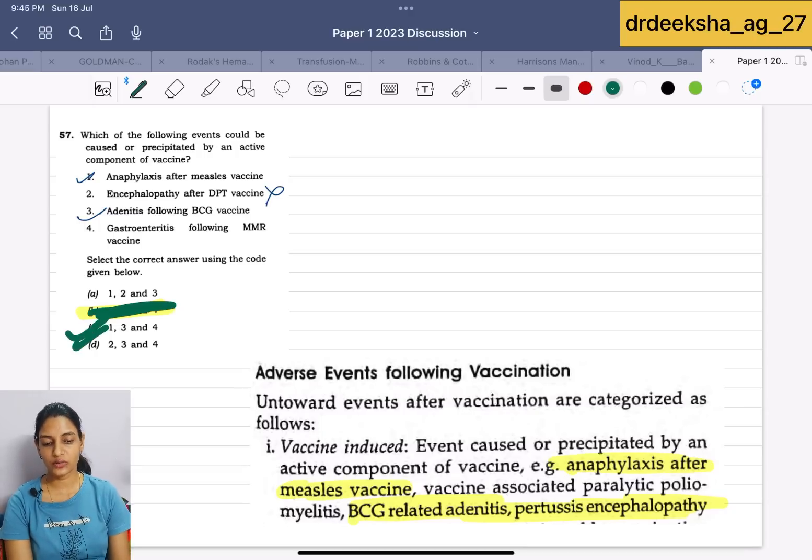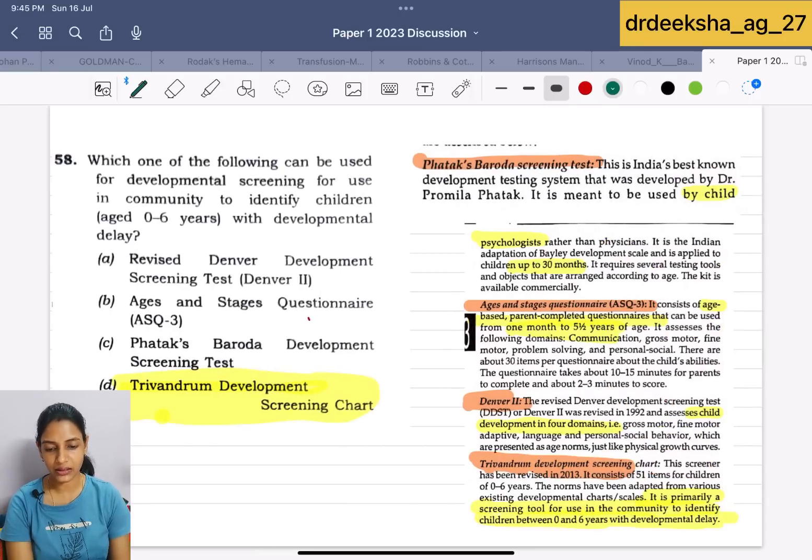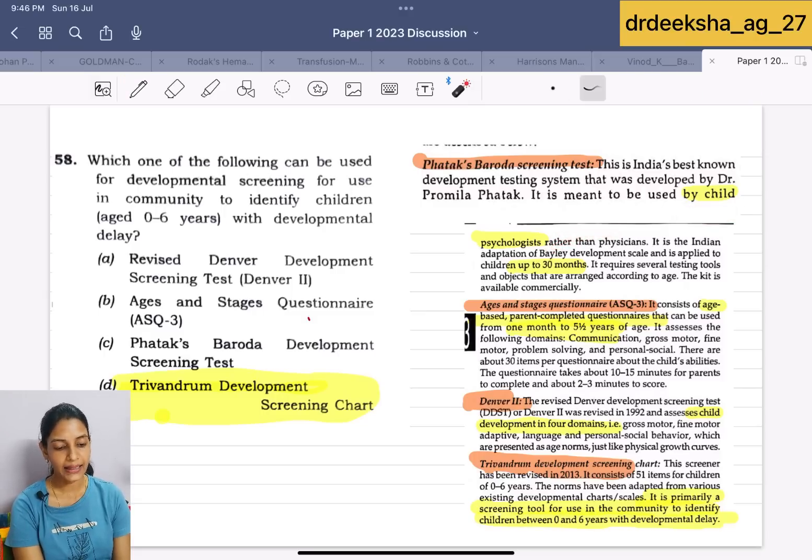Next question is which one of the following can be used for the developmental screening for use in community. These are some tests used for the developmental screening. First is FATEC Baroda screening test. It is for the child psychologist. Age and stage questionnaire, it is age based and parent completed questionnaire for the age of 1 month to 5 and a half year. Denver 2, it is for the child development in 4 domains and Trivandrum development screening is primarily the screening tool for use in community to identify children between the age of 0 to 6 years in development delay. Answer for this is Trivandrum development screening chart.